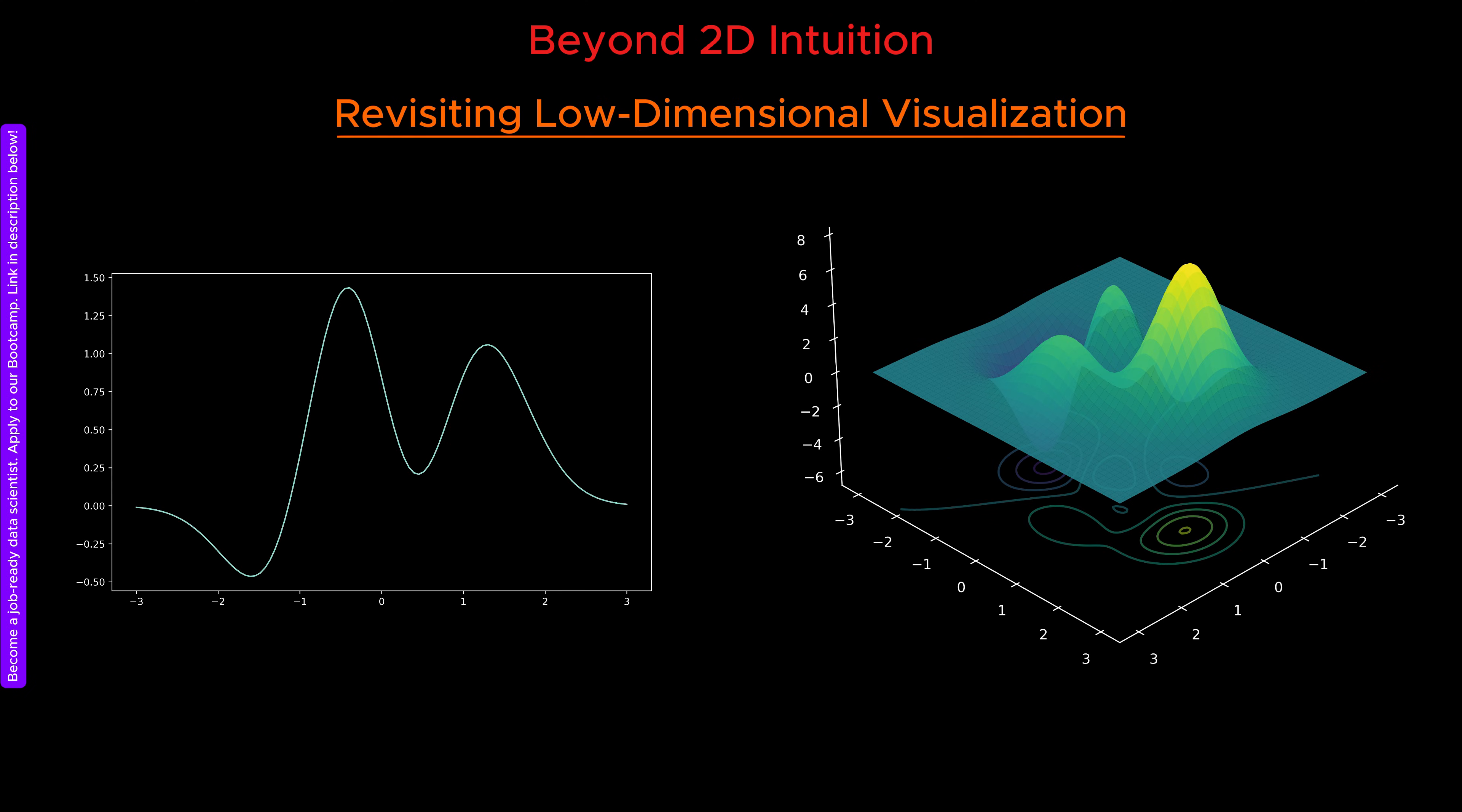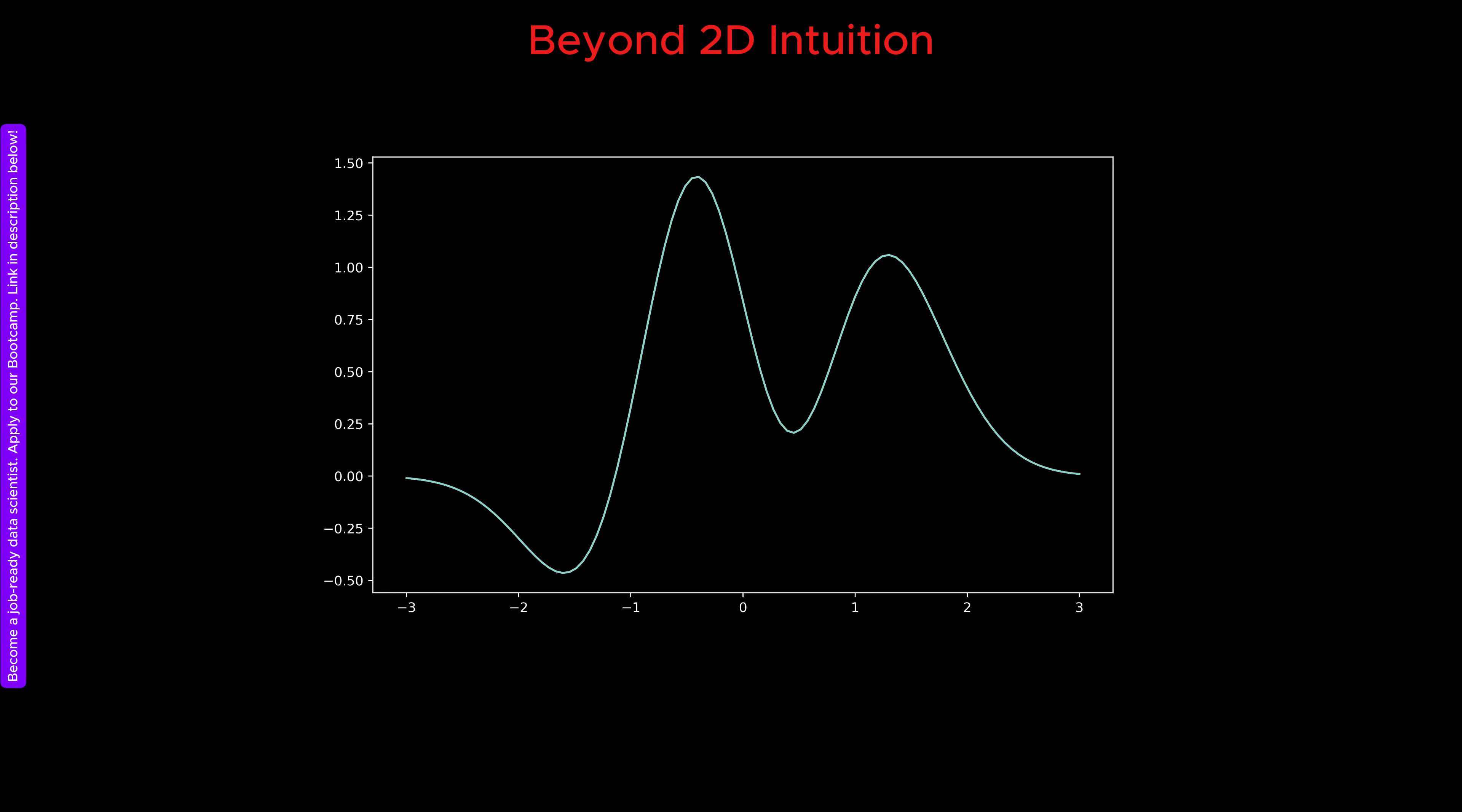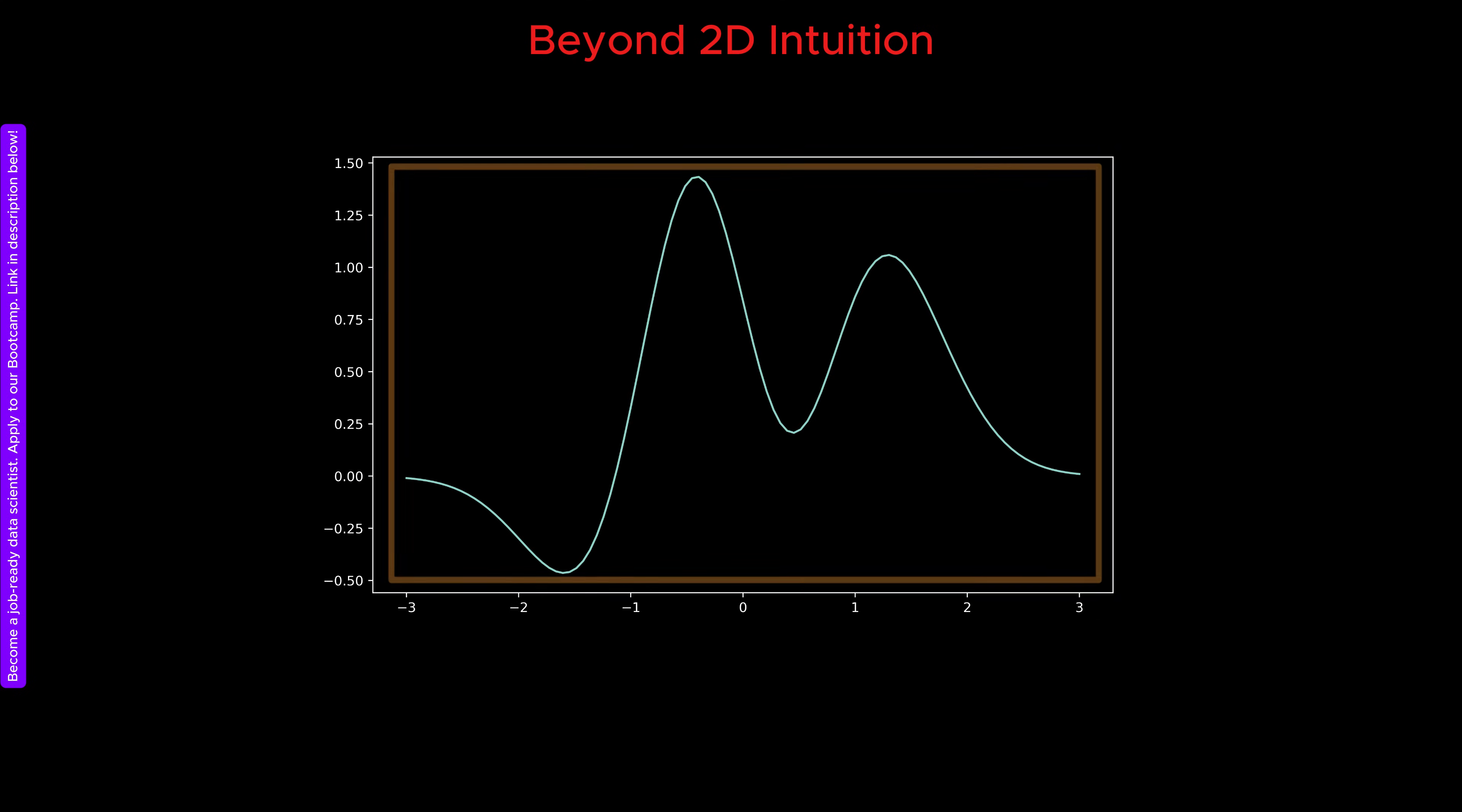So why is it so hard to visualize spaces with more than two dimensions? To understand that, we need to carefully examine what we are actually doing when we visualize low dimensional spaces. Let us start with the simplest case. Assume that our loss function or free energy depends on only one variable, which we can call x.